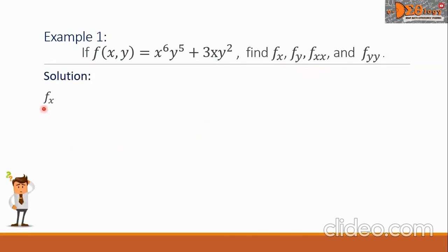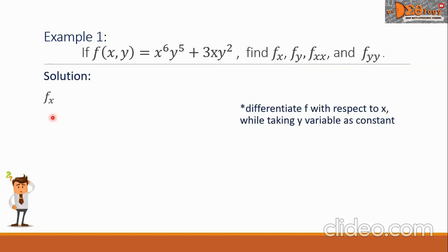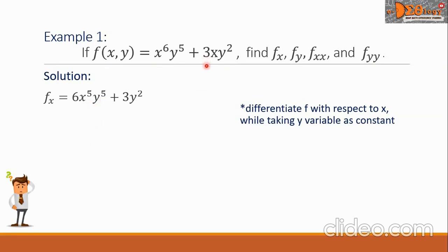Let's begin with f sub x. We are going to differentiate the function f with respect to x, taking y as constant. So the derivative is 6x raised to 5 times y raised to 5, plus the derivative of 3xy squared, which is 3y squared. This is our answer.